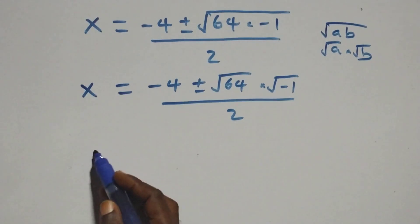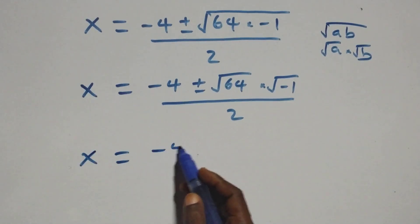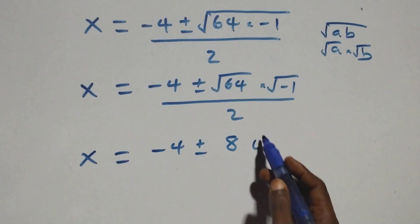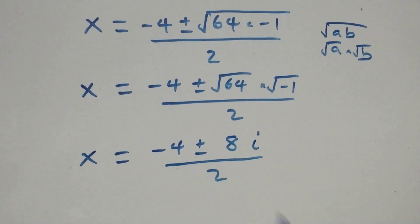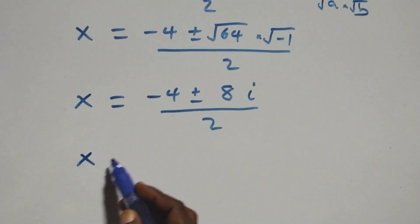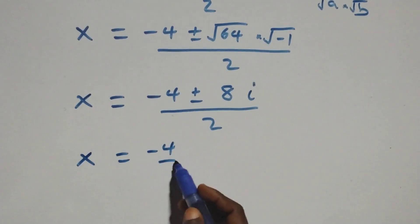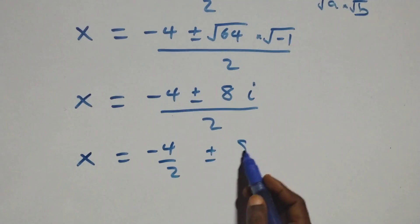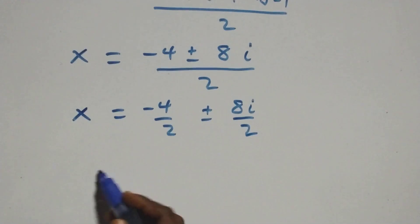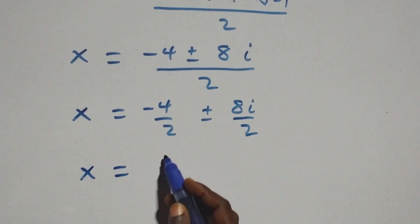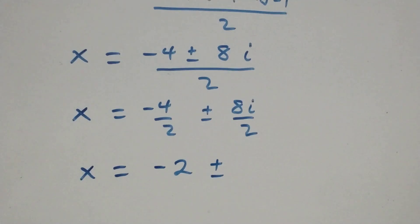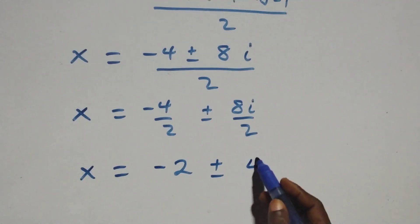The square root of 64 is 8, and the square root of minus 1 is i. So x equals (minus 4 plus or minus 8i) over 2. Splitting the fraction gives x equals minus 4 over 2 plus or minus 8i over 2, which simplifies to x equals minus 2 plus or minus 4i.